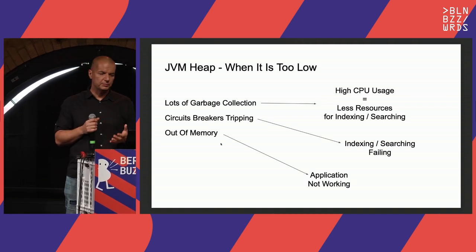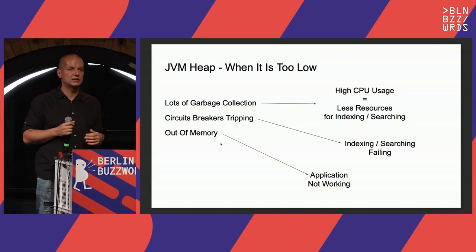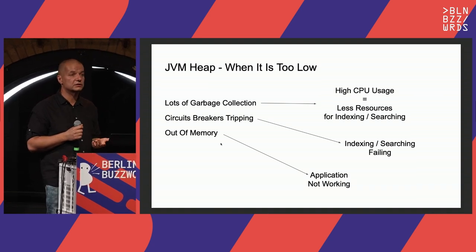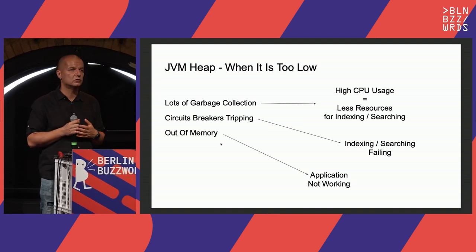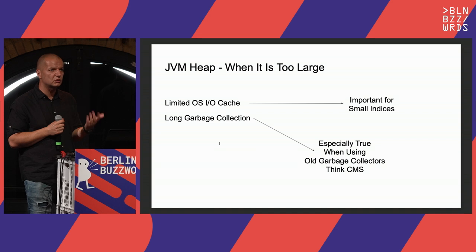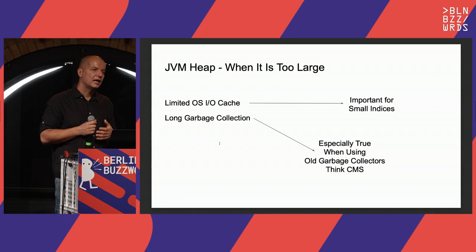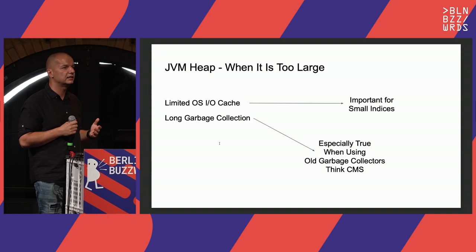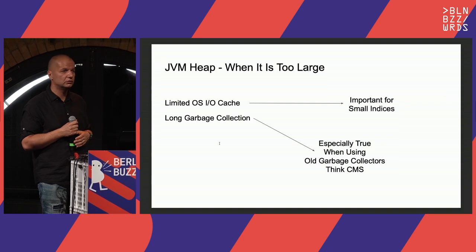When the heap is too low, you'll see lots of garbage collection, high CPU usage, fewer resources for indexing and searching, circuit breakers start tripping, and finally out-of-memory errors — things just break. We want to avoid that. When the heap is too large, it's less problematic but you'll be limited on IO caches, and with older collectors like CMS you'll see extensive work to free up garbage in the old generation.